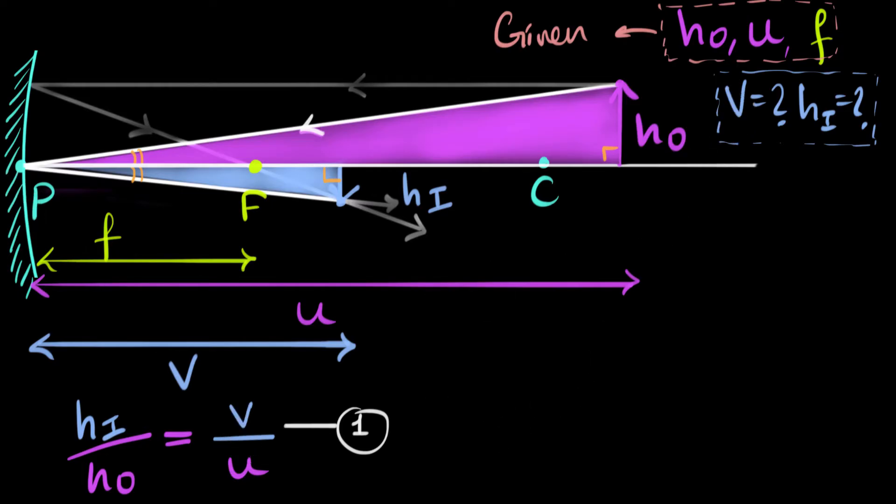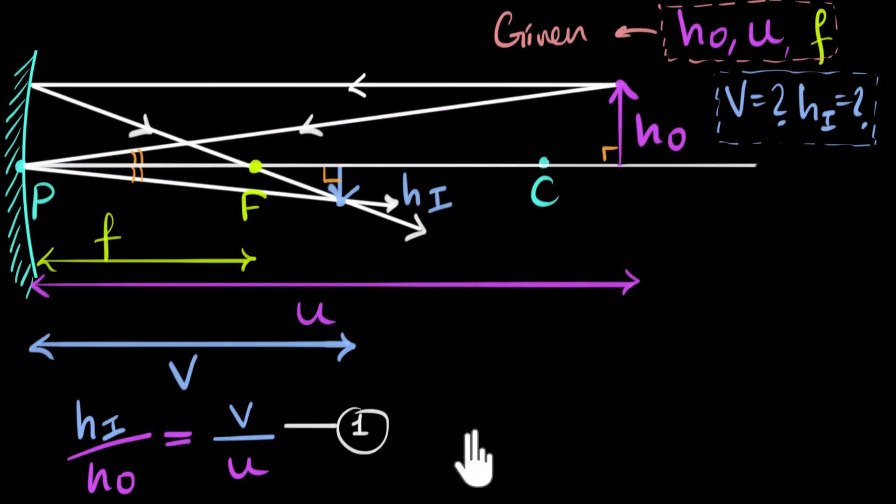So to find the second equation, let's just get rid of these triangles first. All right, now to find the second equation, we're going to bring F into the picture, because F is also given to us. And what I want you to do now is pause the video and see if we can come up with a set of similar triangles,